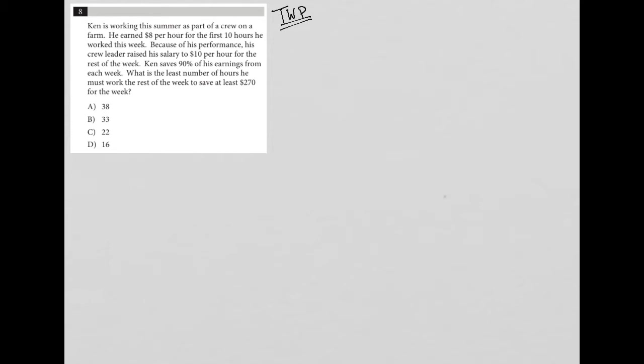The question says Ken is working this summer as part of a crew on a farm. He earned $8 per hour for the first 10 hours. So $8 per hour for 10 hours. Therefore, he made $80, right? Eight times 10. And this is the earnings. So he earns this.